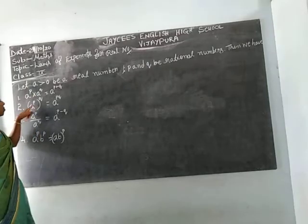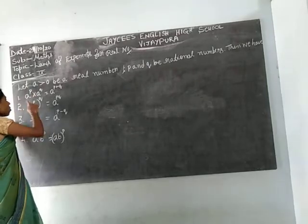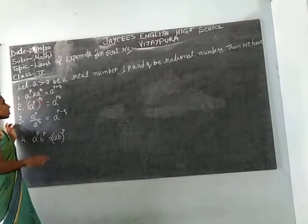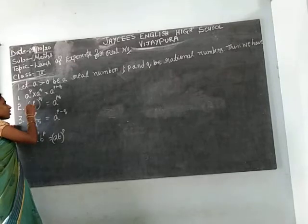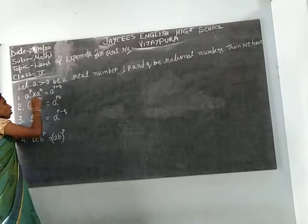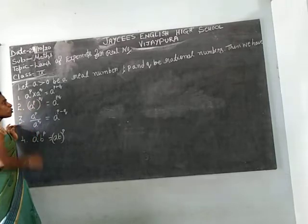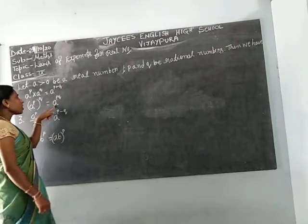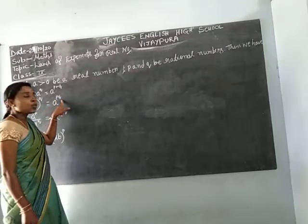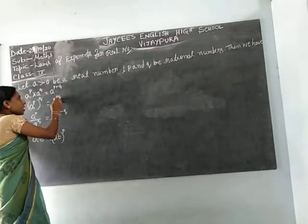The second formula: A to the power of P, all to the power of Q, is equal to A to the power of P into Q.